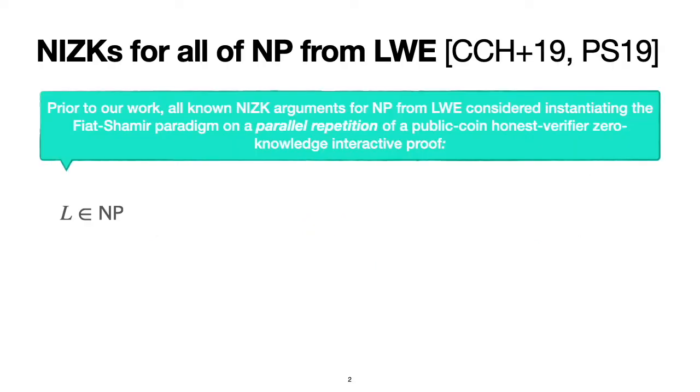Our starting point is NIZKs for all of NP from LWE, which was largely due to CCH+19 and PS19. Prior to our work, all known NIZK arguments for NP from LWE considered instantiating the Fiat-Shamir paradigm on a parallel repetition of a public-coin honest-verifier zero-knowledge interactive proof.